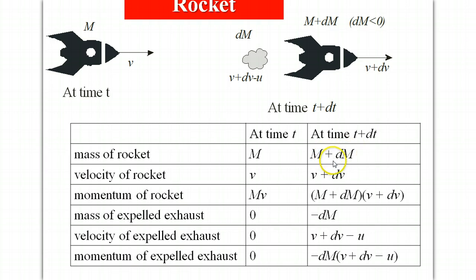At some later time the mass of the rocket is M plus dM, the speed of the rocket v plus dv, so the momentum of the rocket is given by this product. Here's the expelled gas, the mass is minus dM traveling at this speed, again u is the relative speed.